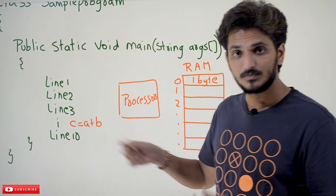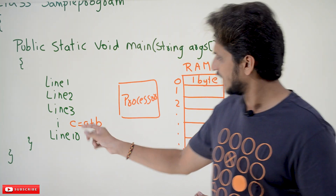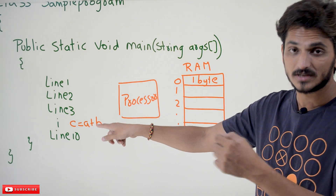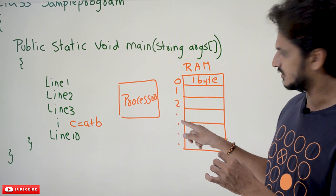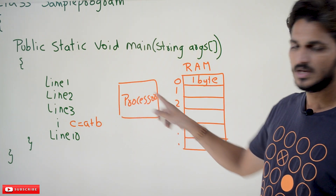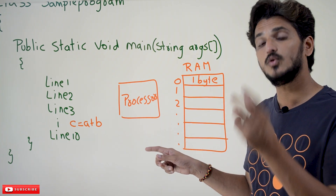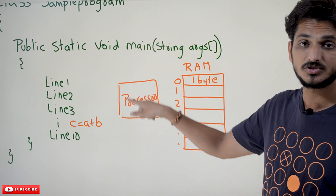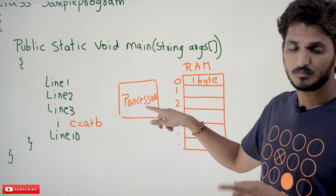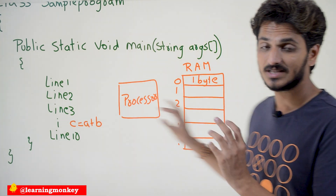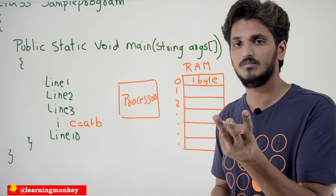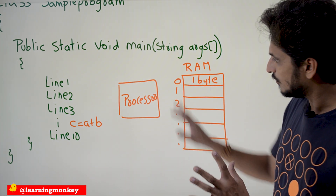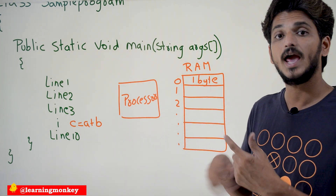If the operation C is equal to A plus B has to be done — whenever the processor gets this operation, it has to go to the random access memory. The processor has to contact the random access memory, find the address of A where the value is present. Suppose it is present in the 8th location — it will get the data from the 8th line. Similarly, get the B value from the 20th line. Now addition is done in the processor. After adding both values, the result will be stored in C — assume C is assigned memory line number 30. The output of A plus B will be stored at the 30th line. This is how the processor and random access memory interact and execute our programs.